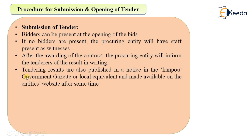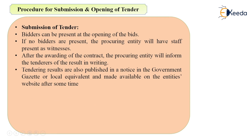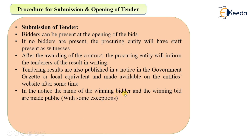This is the standard procedure. Tendering results are also published in the government gazette or local equivalent and made available on the entity's website after some time. After all the procedure is done and the contractor is informed in writing, the tendering results are published noting which contractor was awarded the contract and that they fulfilled all requirements. The name of the winning bidder and the winning bid are made public in that notice.